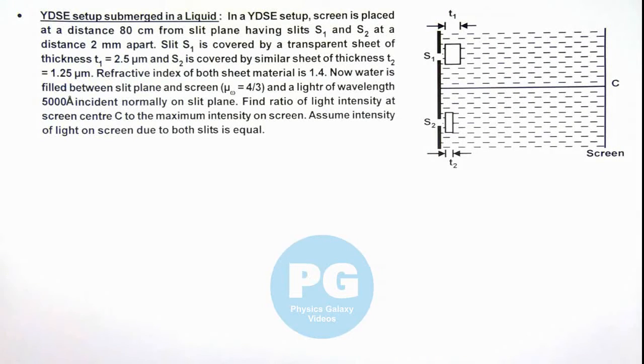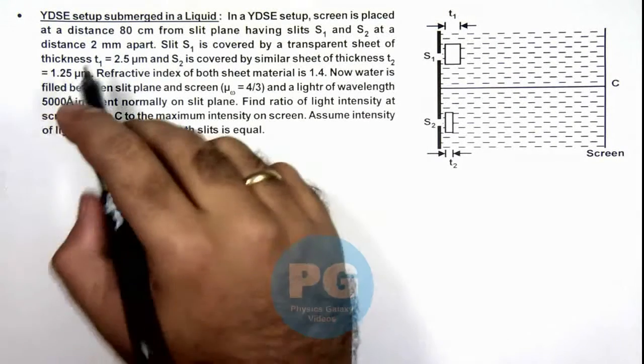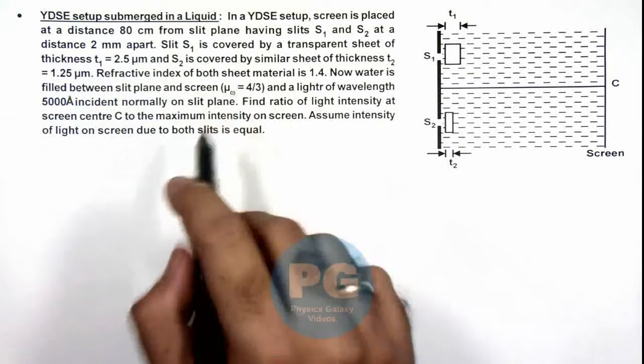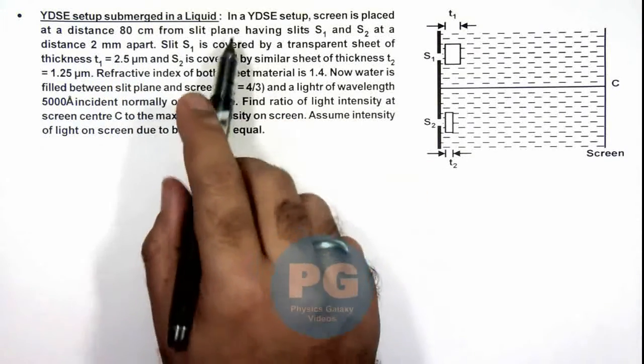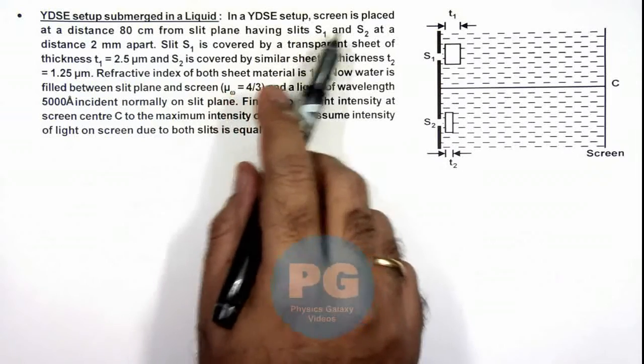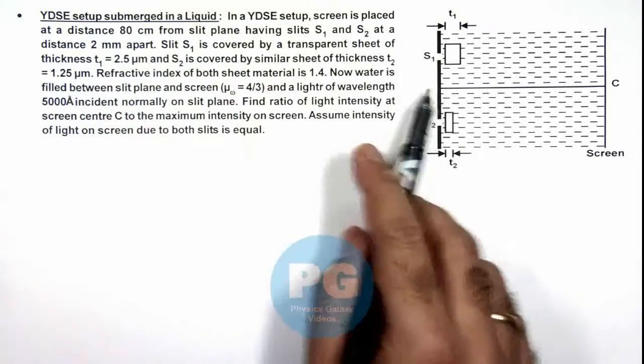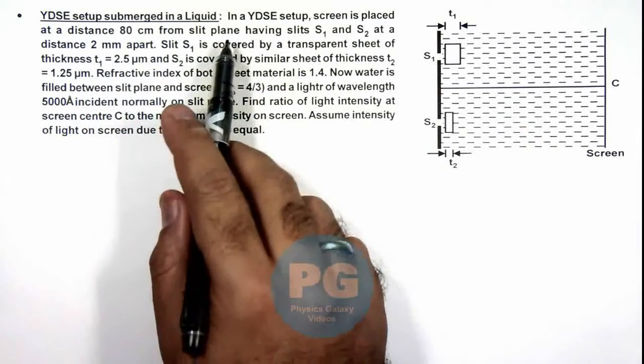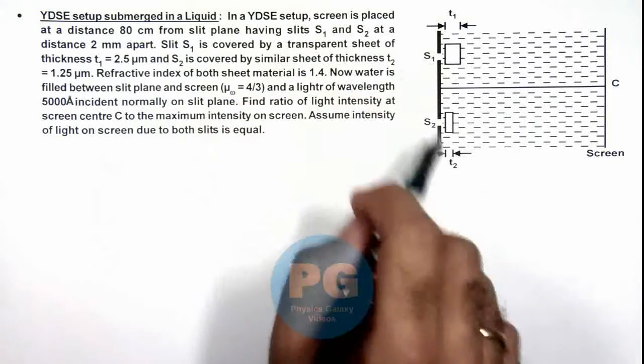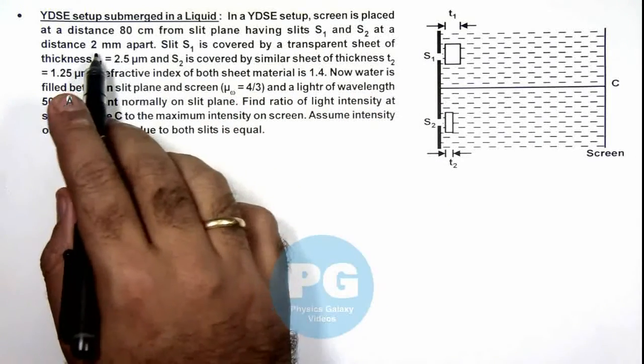In this illustration, we'll discuss about YDSE setup submerged in a liquid. Here, we are given that in a YDSE setup, screen is placed at a distance 80 centimeter from slit plane having slits S₁ and S₂. The separation of slit is 2 mm.